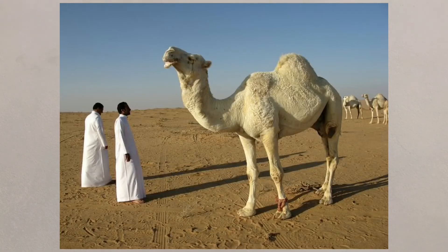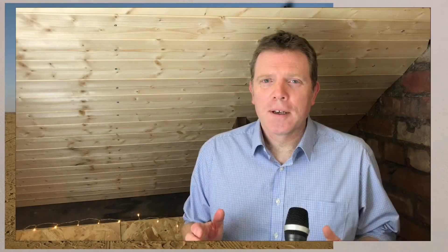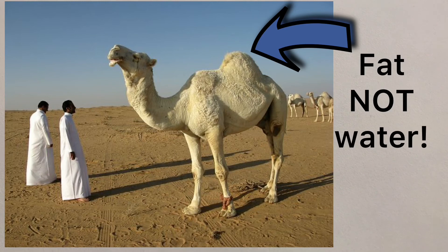Their fur will protect them from getting sunburn, and the most famous feature is their hump, which is a store of fat, not water, that they can tap into when food is scarce.